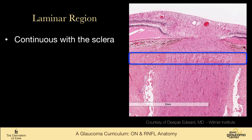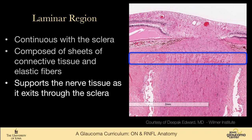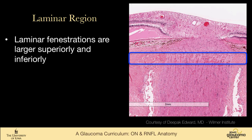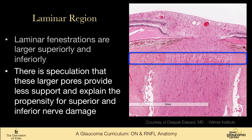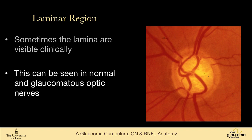The axons then travel through the lamina cribrosa. The laminar region is contiguous with the sclera — it's the porous portion of the sclera that allows axons to travel through, made up of sheets of connective tissue and elastic fibers. It supports the nerve tissue as it exits through the sclera. The fenestrations in the lamina are larger superiorly and inferiorly, and there is speculation that these larger pores provide less support and may explain the propensity for superior and inferior optic nerve head damage. Sometimes you can see the lamina in patients with a very deep cup, but it's not a tremendously helpful finding.